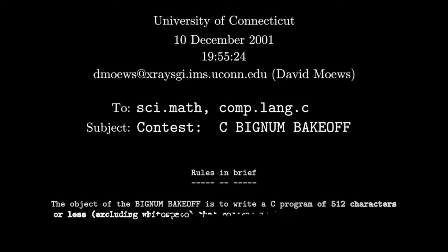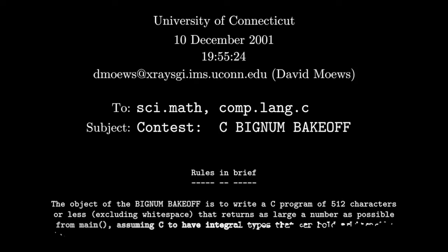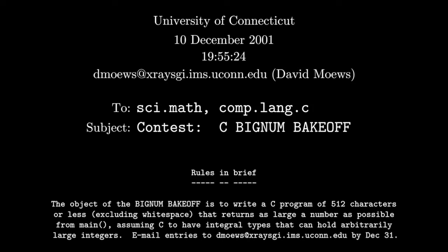The article started with the rules of the contest. Contestants were asked to send a program of a short length, and the winner would be the contestant whose program returned a number larger than the other programs. It was to be run on a hypothetical computer where the integers could be arbitrarily large. They had 20 days to come up with their programs.